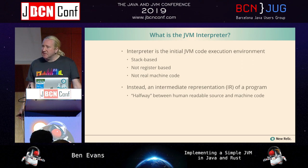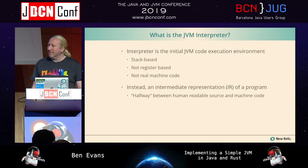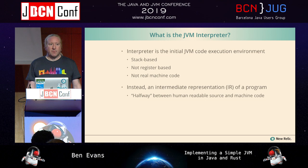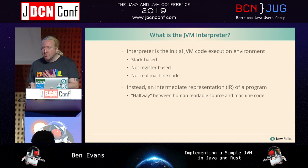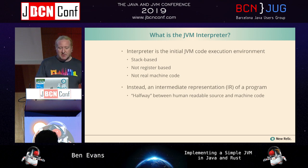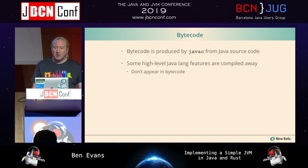What is bytecode? If you did a compiler course, you'll know what an intermediate representation is — and actually bytecode really is one of those. Javac isn't really a full compiler; it's really just the front half. It takes human-readable source code and translates it into an intermediate representation. Loosely, bytecode is kind of halfway between human-readable source and machine code.